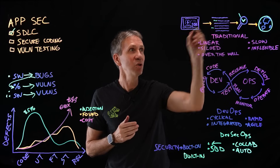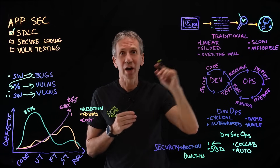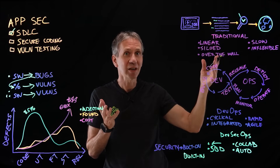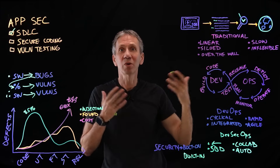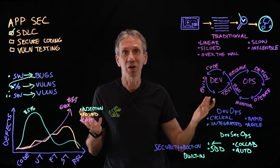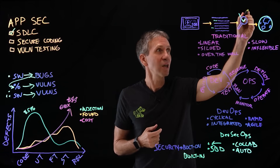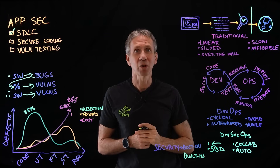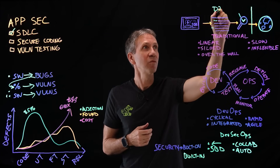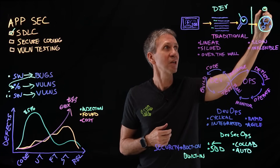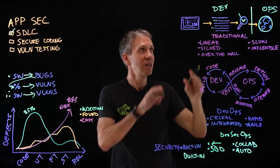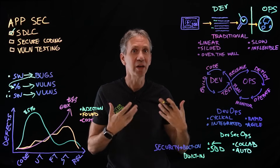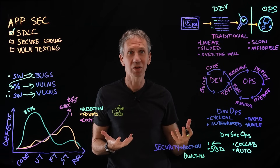Then we go to a testing phase, and ultimately we release it to the world and put it in production. Traditionally, there's a big line separating these two phases — this is the dev part of the process and this is the ops part. This is where we're developing, and this is where we're releasing and then operating it in a continuous state.